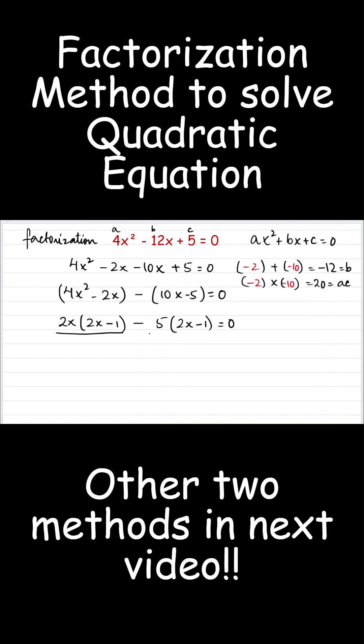So this is my first term. This is my second term. And I can see that in the first and second term, this 2x minus 1 bracket is common. So let's take out this bracket common or outside. From the first term, when I take out 2x minus 1 outside, what is left? It's 2x minus.